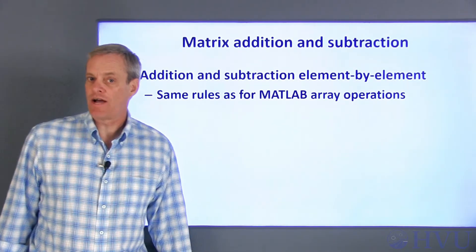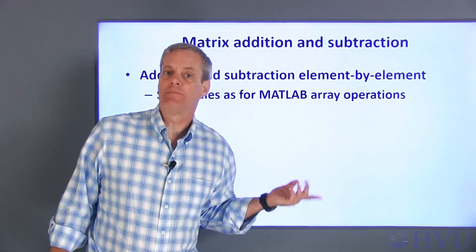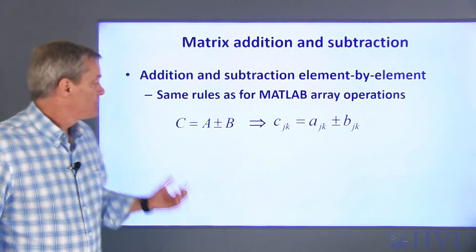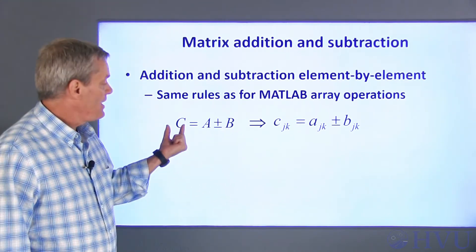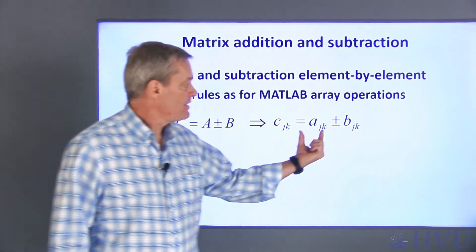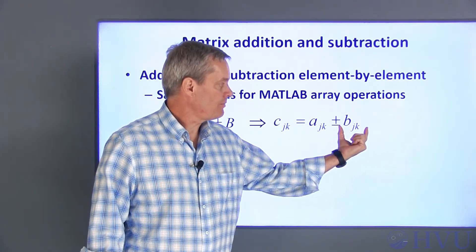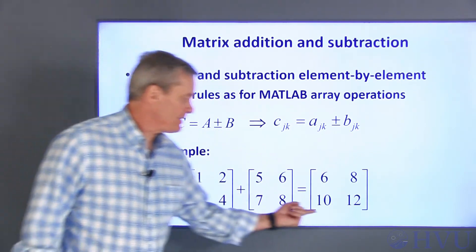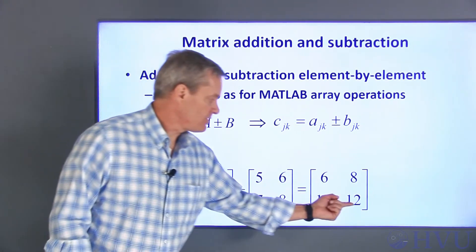First, I'll talk about addition and subtraction under the rules of linear algebra. These operations are the same as the array operations of addition and subtraction. The operations are done element by element. So, if a matrix C is equal to a matrix A plus a matrix B, each element in C, C sub jk, the element at the jth row and the kth column, is the sum of the element in A at the jth row and kth column plus the element in B at that location. As an example, if I add these two arrays, I get this result. 1 plus 5 is 6, 4 plus 8 is 12, and so on.